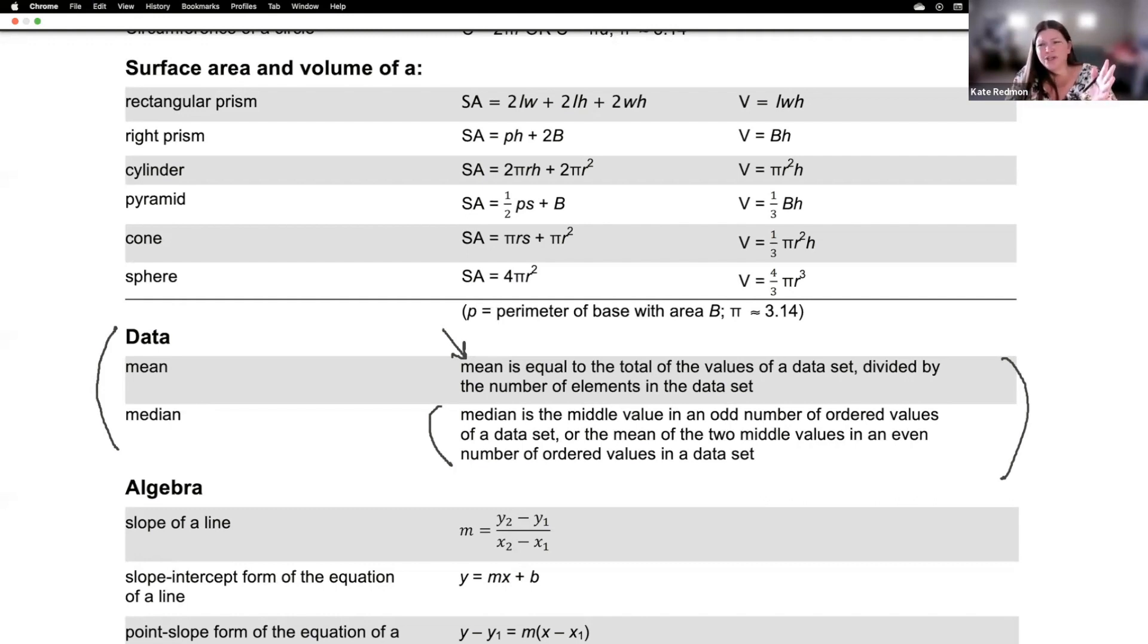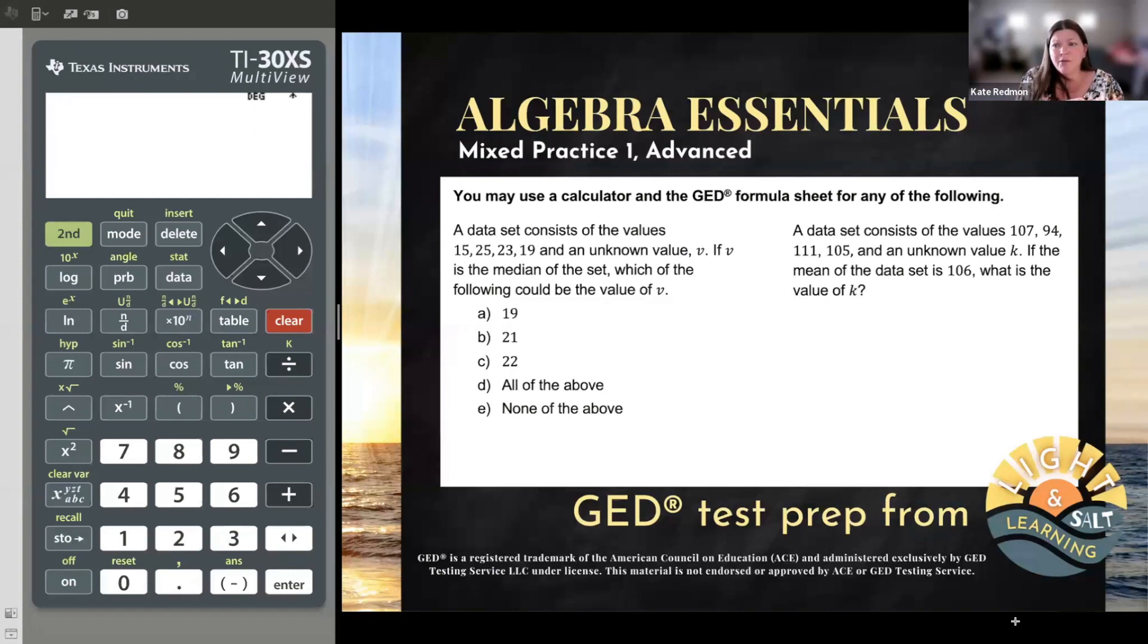So let's see what it has to say about median. Median is the middle value in an odd number of ordered values of a data set, or the mean of the two middle values in an even number of ordered values in the data set. Basically, what you really need to know is that the median is the middle of an ordered list. So if you put the numbers in order, and you get to the direct center, that's the median.